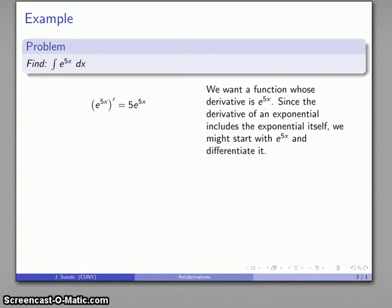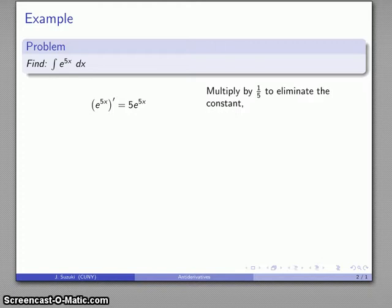So there's my e to the 5x. Derivative is world's easiest derivative - the same thing, e to the 5x, times derivative of what our power is. Now again, what I want is an e to the 5x, what I have is a 5e to the 5x, so I can multiply by one-fifth to eliminate that constant.